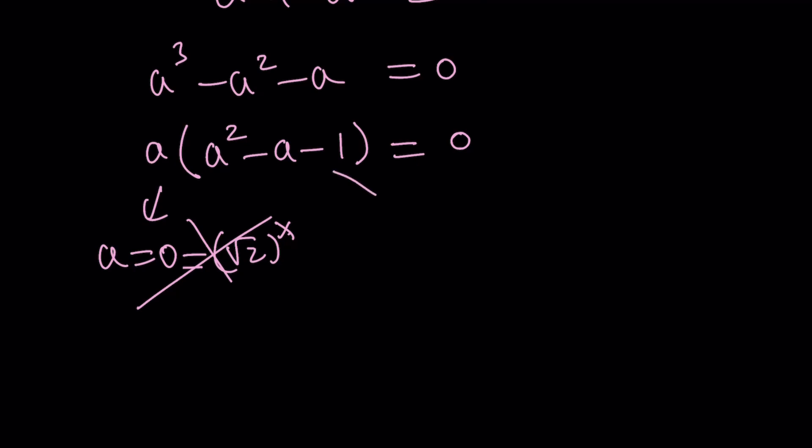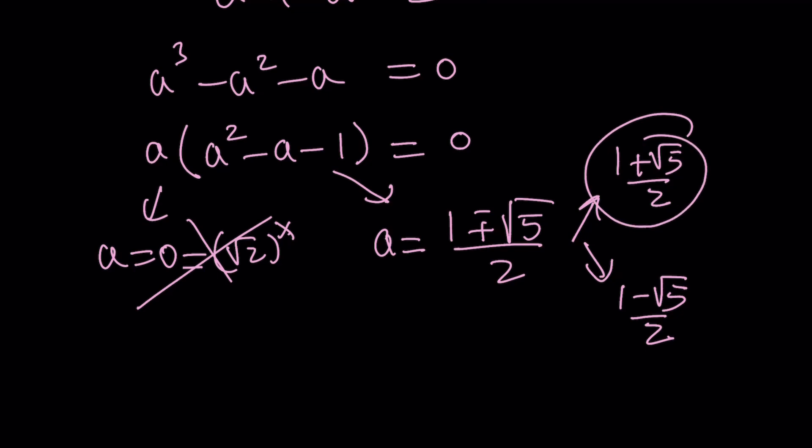What happens from here? We get two solutions by using quadratic formula. Negative b plus minus the square root of b squared minus 4ac. That's 5 divided by 2. And this is when we split it up into 1 plus root 5 over 2 and 1 minus root 5 over 2.